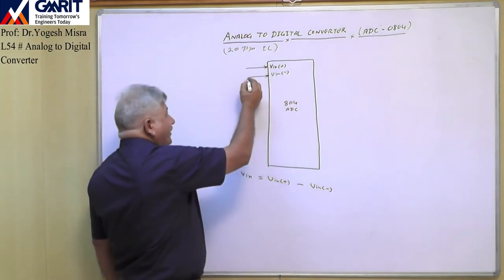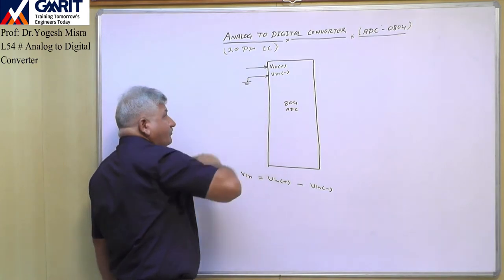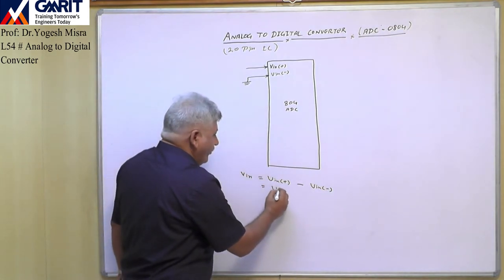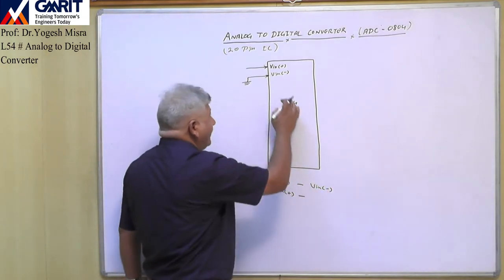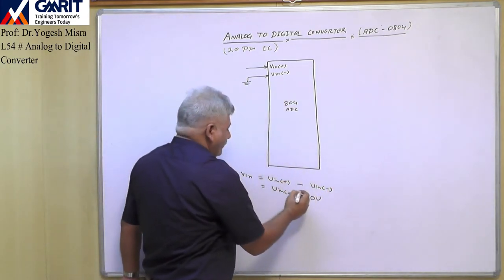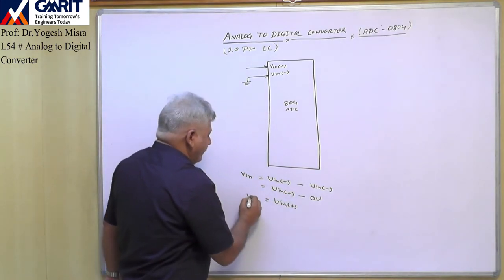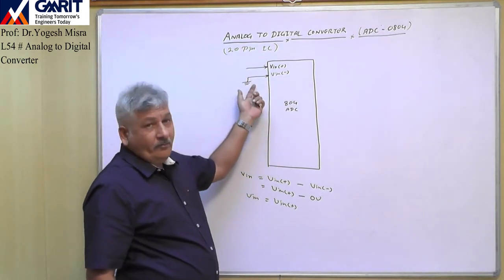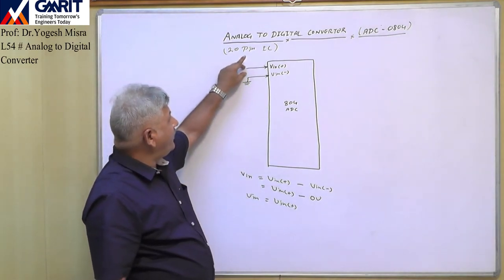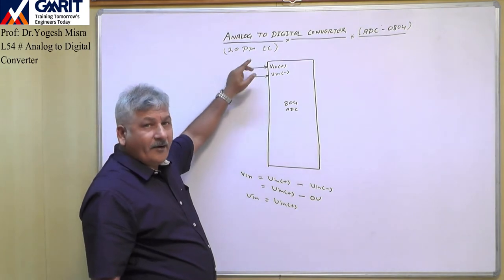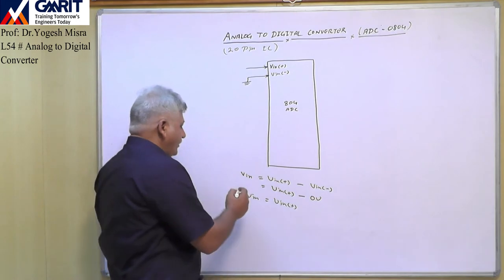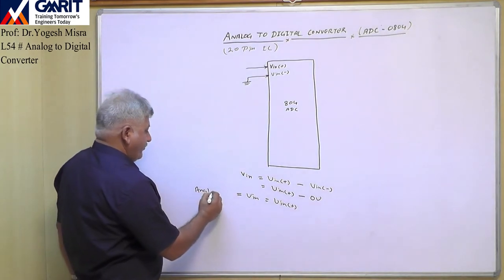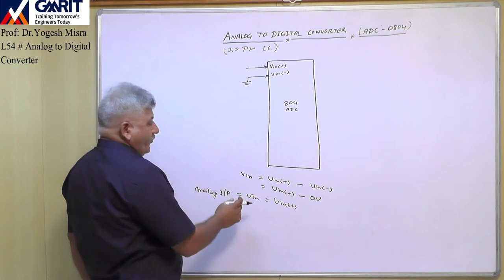Generally, VIN minus is connected to ground, meaning it is at 0V. So VIN equals VIN plus. If we connect the VIN minus terminal to ground, then whatever analog signal we apply at the VIN plus terminal will be your analog input.